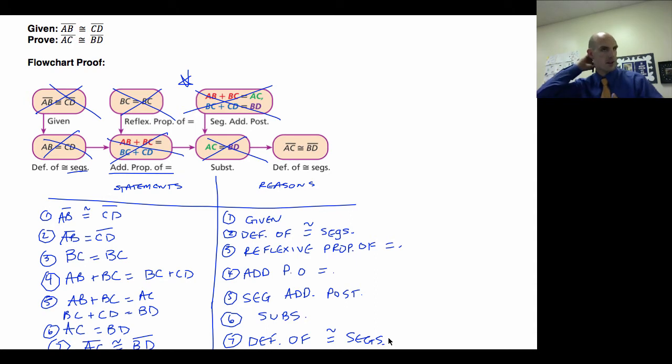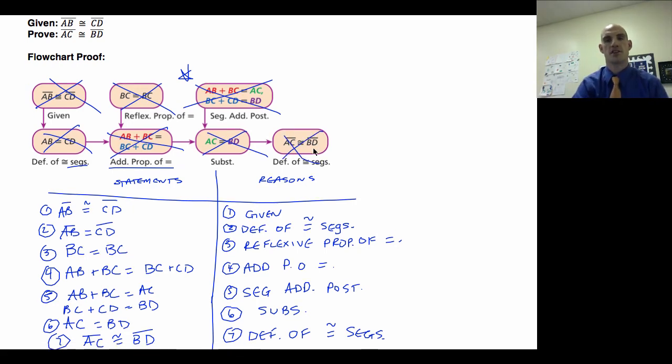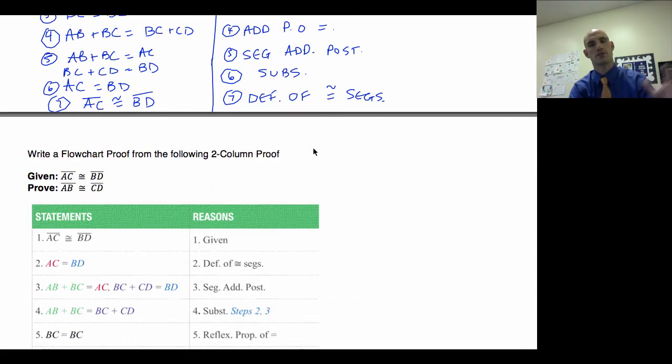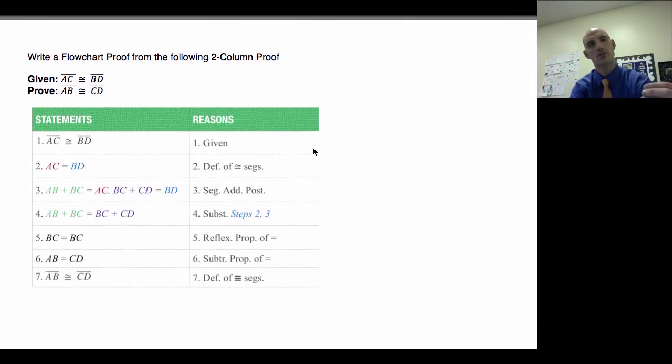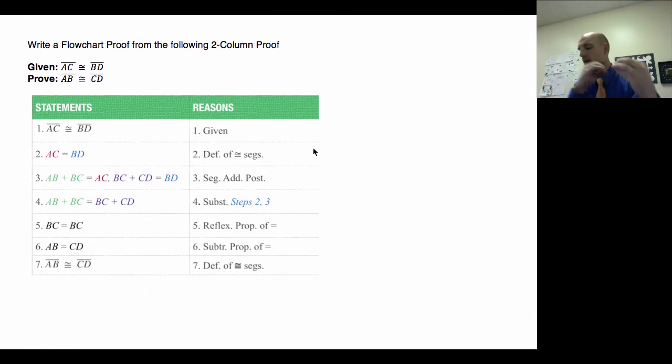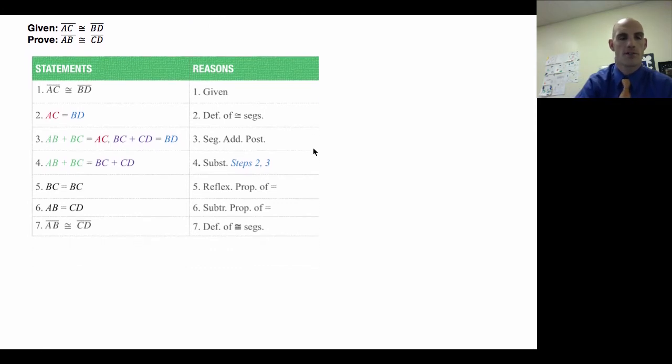So that was pretty straightforward. We used them from left, sorry, from left top to right bottom. Used everything in sequence to form this two-column proof. So now we're going to have to work backwards. And what we're going to have to remember is when we're making these flowcharts, everything's going to have to flow from one another. So here's what I'm going to do. I'm going to start out with this.